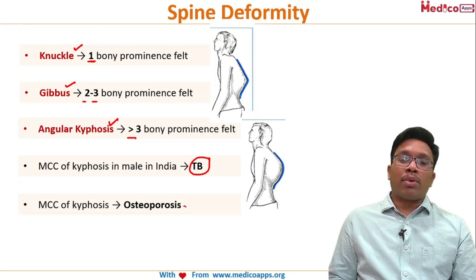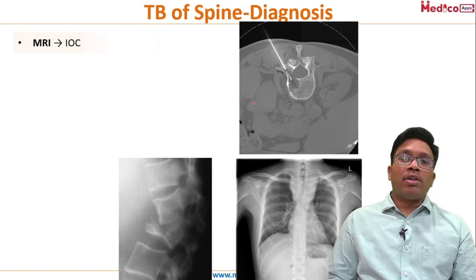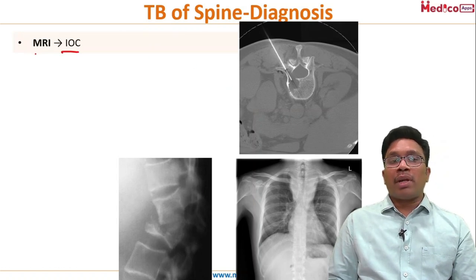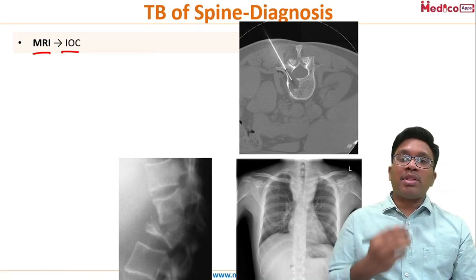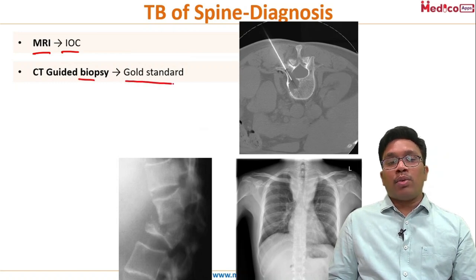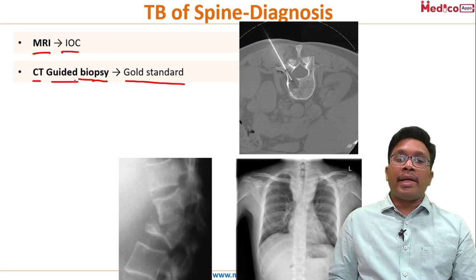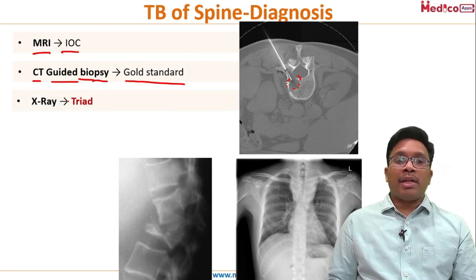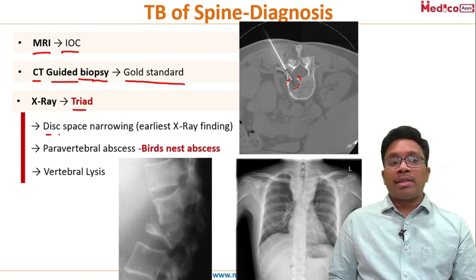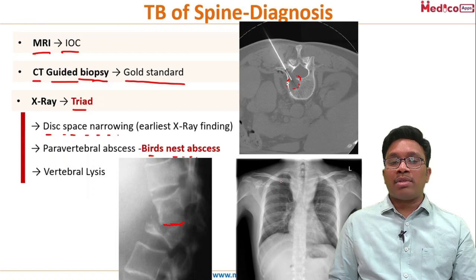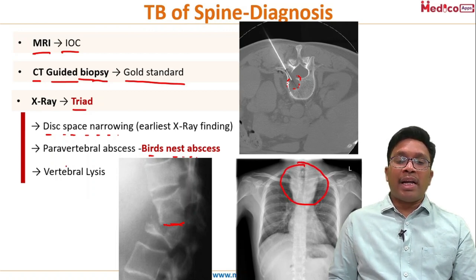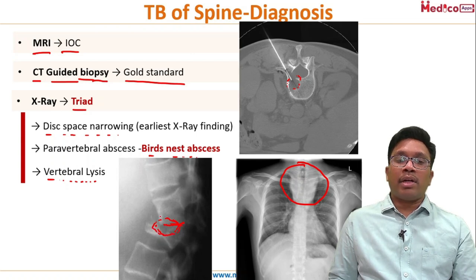For diagnosis, the investigation of choice is MRI — it shows bone, soft tissue, and neural structures. Biopsy is the gold standard, with CT-guided biopsy through the pedicle being helpful. On X-ray, there is a triad: disc space narrowing — the disc space is completely lost between two vertebrae; paravertebral abscess called bird's nest abscess; and lysis or damage of the vertebral body.